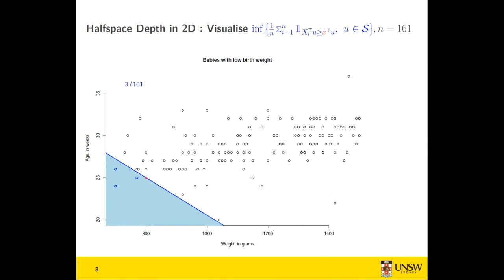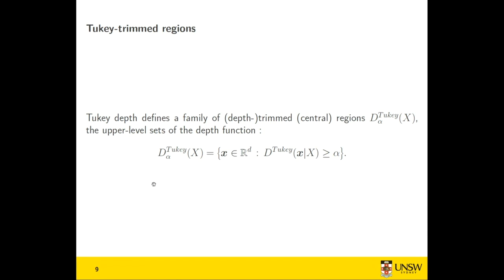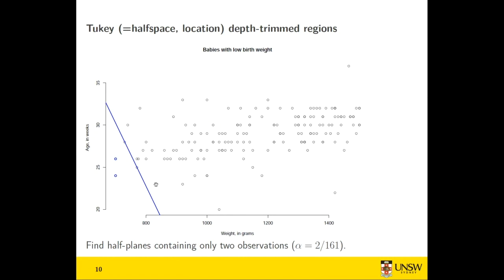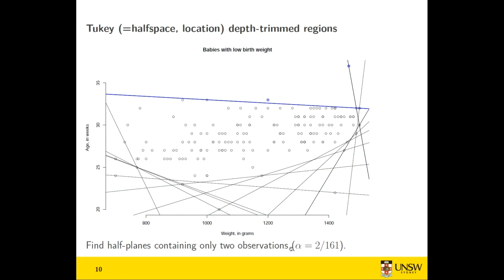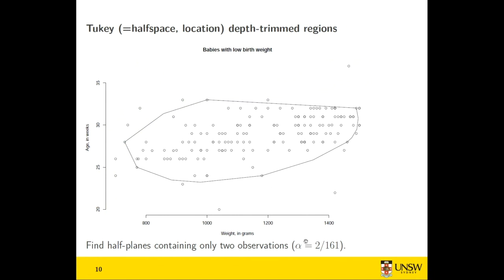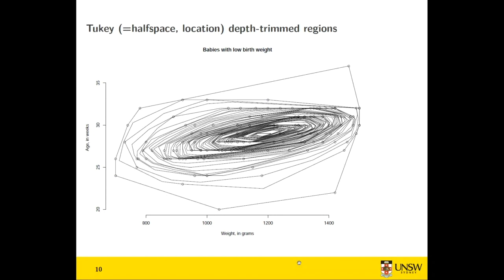Based on this technique, we can also compute depth-trimmed regions. For example, I find all half-planes containing only 2/161 — about half a percent — of the points, and do that for all points. This gives the trimmed region for that alpha value. Doing this for all values of alpha gives us the depth-trimmed regions.